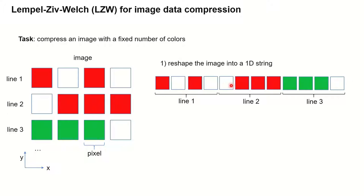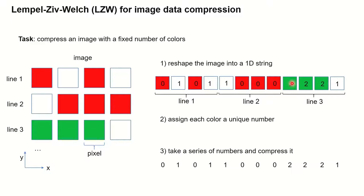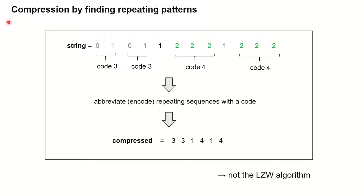The second thing we do is we assign a unique number to every color. So zero represents red, one represents white, and so on. We essentially translate this string of pixels into a string of numbers. That's the string we will look at in the following and that we will compress by applying the LZW algorithm to it.